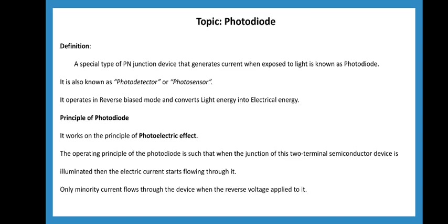Next, we will see the photodiode. A special type of PN junction device that generates current when exposed to light is known as a photodiode. If you have an LED, light is emitted — that is a light emitting diode. If you have a photodiode, you provide a light supply and current is produced.